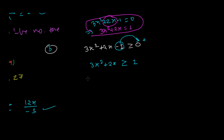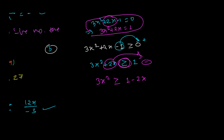If you want to shift 2x to the other side, since it is plus here, it becomes minus on the other side. So it becomes 3x² ≥ 1 - 2x. Any term can be shifted from left-hand side to right-hand side by changing its sign. The central inequality sign — greater than, less than, or their equals variants — will never change.